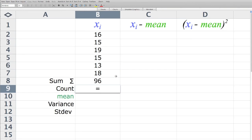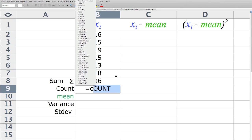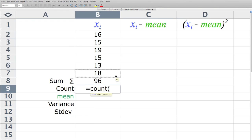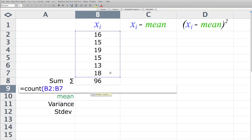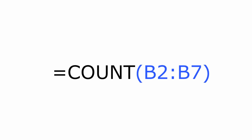Next thing I do is hit equal, type the word count, open parentheses. I select the first value and then type colon and drag down to the bottom. You can also just type the command.